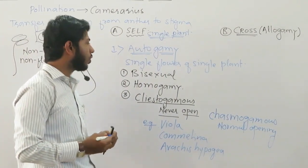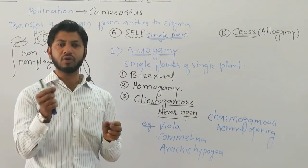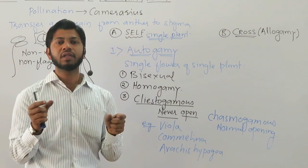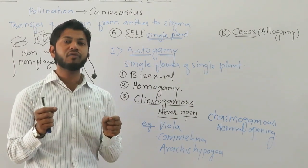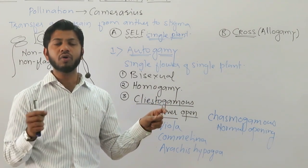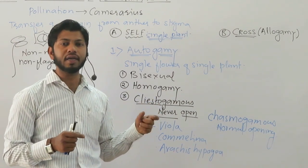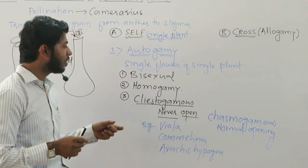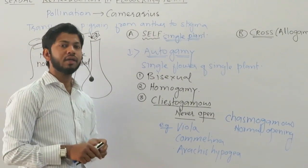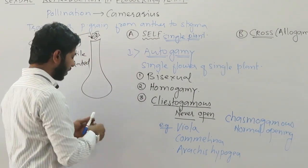In autogamy, pollen grains are transferred from the anther to the stigma of the same parental plant body. So the male gamete and female gamete have similar genetic material. After formation of the zygote and seed, the seed resulting from autogamy does not have variable genetic material — there is a surety of pure genetic material in a seed developed after autogamy.